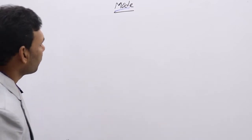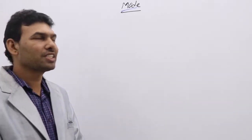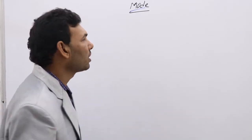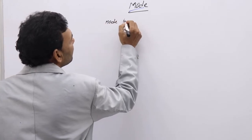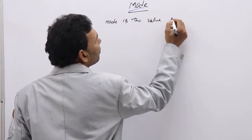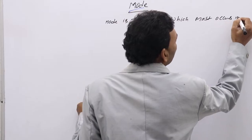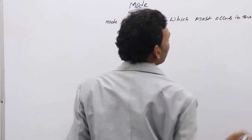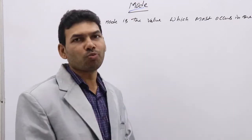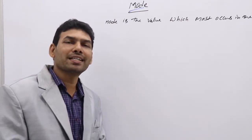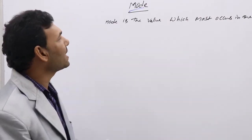Coming to the mode of the data. What is mode? This is one central value. Mode is the value which most occurs in the data. That means the maximum number of times a value is repeated, we treat it as mode. Or simply, we can say the value which has the highest frequency, that we call mode.